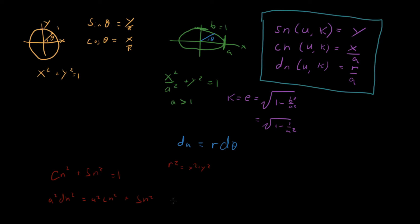And if we rewrite it using that, then what we get is dn squared plus k squared sn squared equals 1. That's another property.